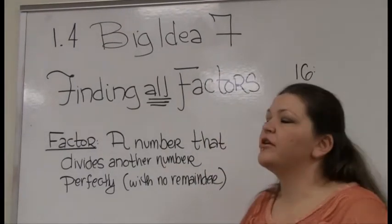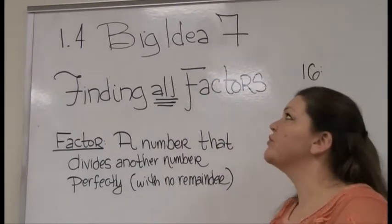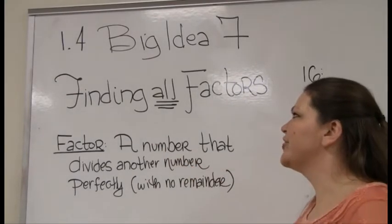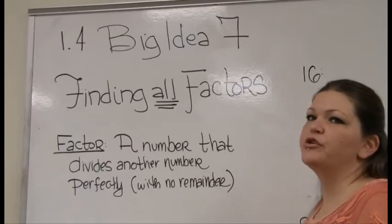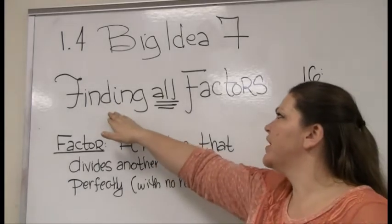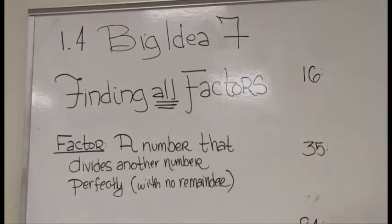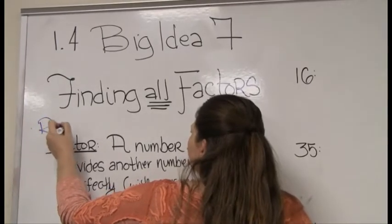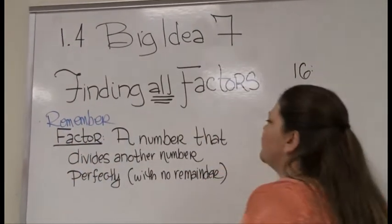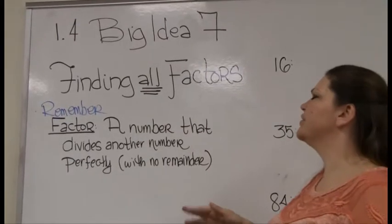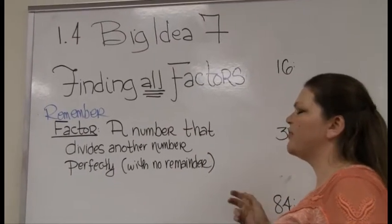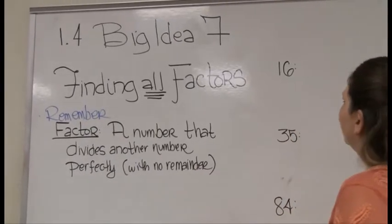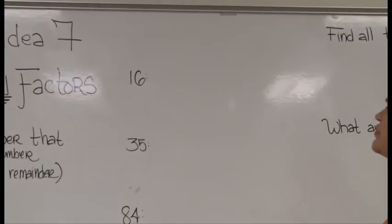We are going to talk about our next big idea from section 1.4 — Big Idea 7. This is an actual GED problem. Pretty much everything we were doing up till now leads into this. We're going to look at finding all factors of a number. A little reminder: a factor is a number that divides another number perfectly — basically with no remainder.